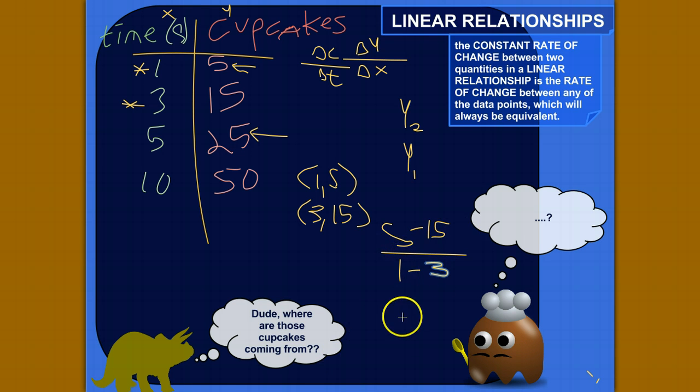Okay, so 5 minus 15 is negative 10, and 1 minus 3 is negative 2. We would simplify that. The negatives cancel out, and 10 over 2, or 10 divided by 2, is 5.